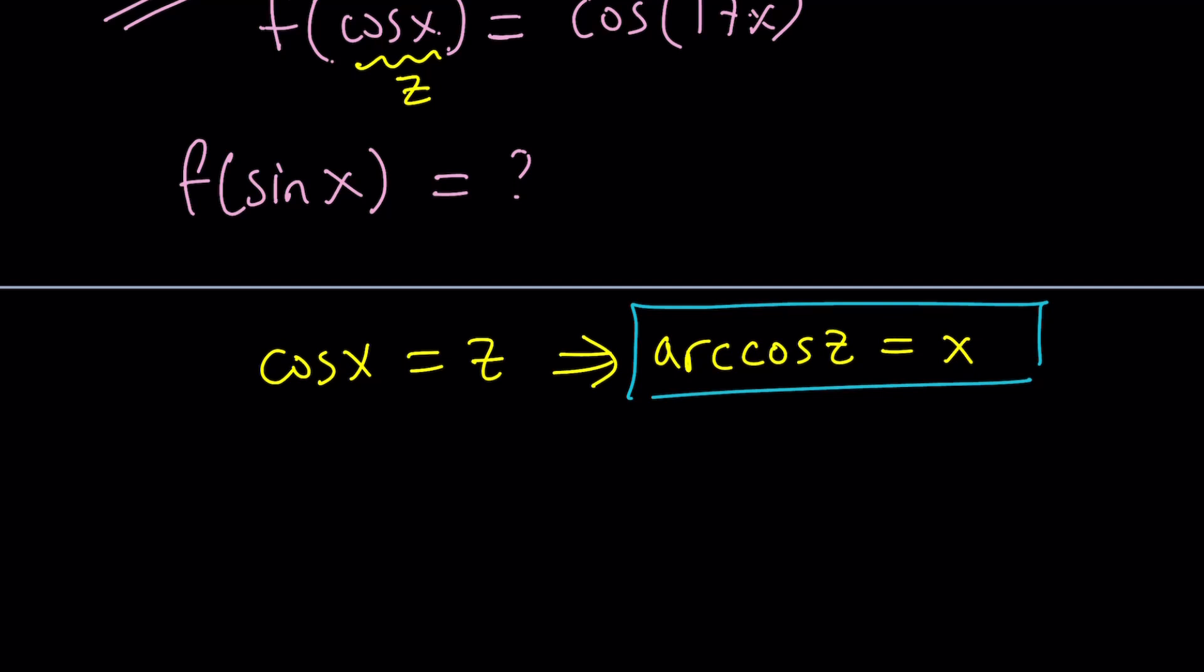Because that's going to give us f(z). So, let's just write z directly. On the right hand side, we're going to replace x with arccos(z). So, this is what f(z) is. And we're trying to find f(sin x). Which means, it would make sense if we replace z with sin x this time.